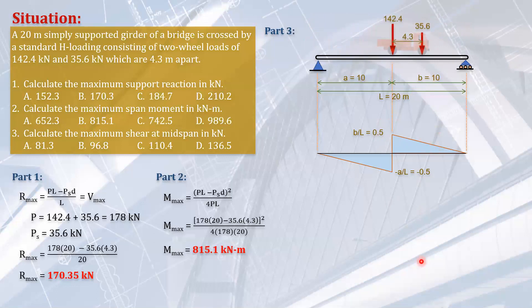So obviously, that will be the heavier load is right here and the other load will be here. So 142.4 has an ordinate. The ordinate in the influence line where it is acting is 0.5. And the other one will be here. So we will solve this ordinate here. So this is 4.3 meters and this is 10 minus 4.3, 5.7 meters.